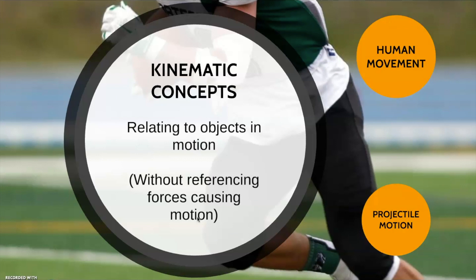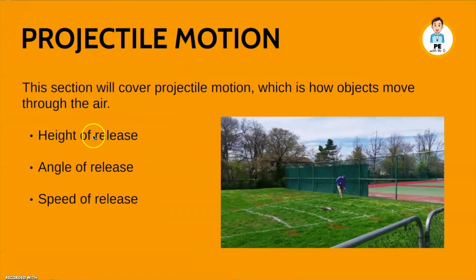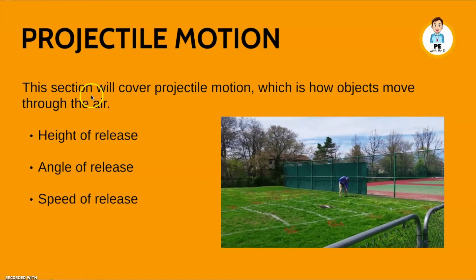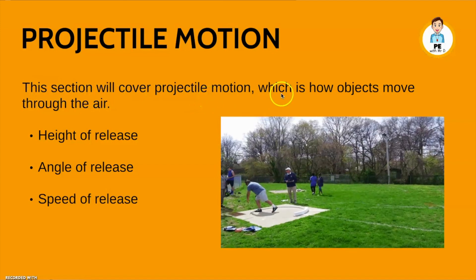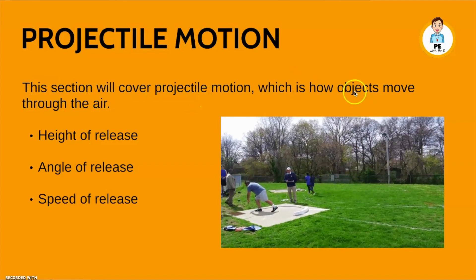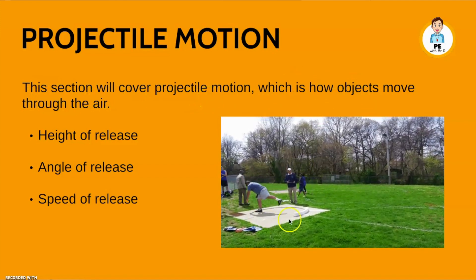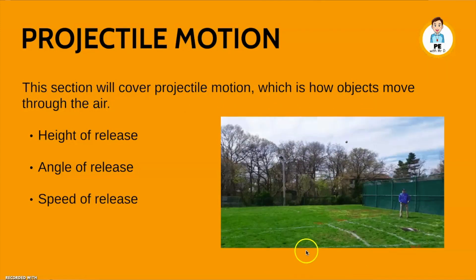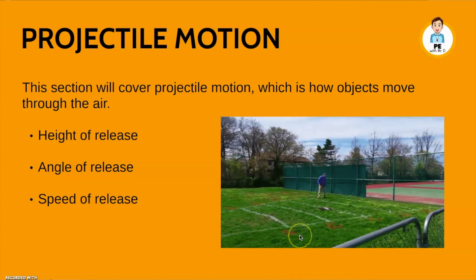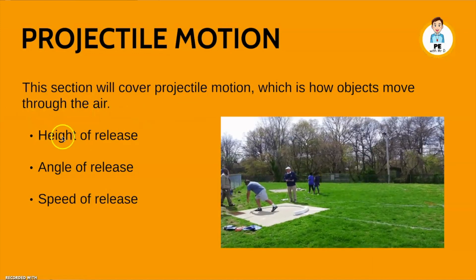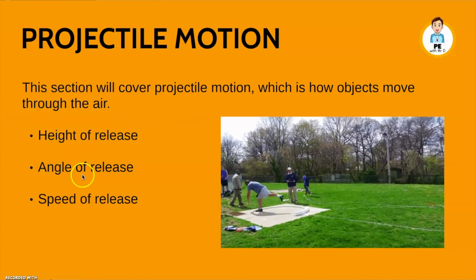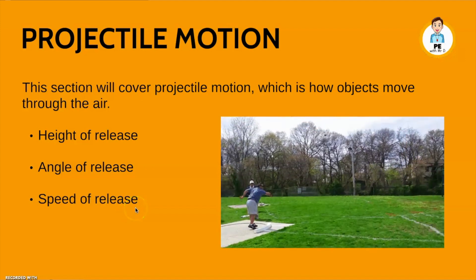Those are the concepts relating to human movement within the kinematic biomechanics sphere. Next, and finally, we're going to move on to projectile motion. This section will cover projectile motion — how objects, similar to this shot put, move through the air. We're going to cover height of release, angle of release, and speed of release.